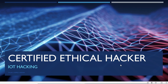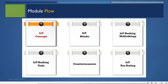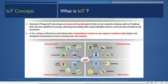IoT stands for Internet of Things, also known as Internet of Everything (IoE). It refers to the network of devices with an IP address that have the capability of sensing, collecting, and sending data using embedded sensors, communication hardware, and processors. In IoT, a thing is a device implemented on natural, man-made, or machine-made objects having the functionality of communicating over the network.